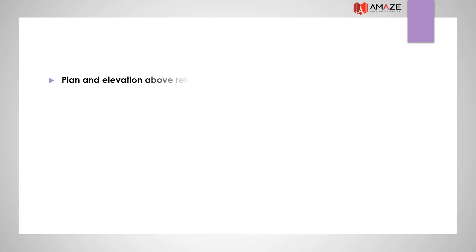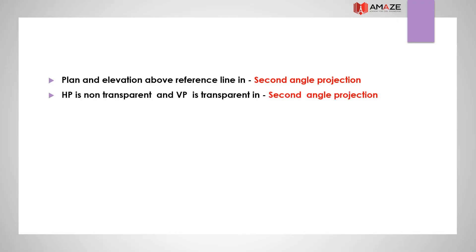In second angle projection, both the plan and elevation are above the reference line. In second angle projection, the horizontal plane is non-transparent and the vertical plane is transparent.